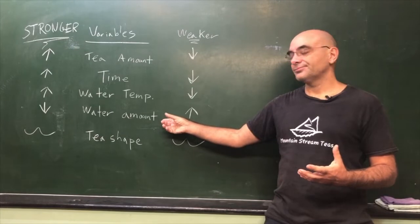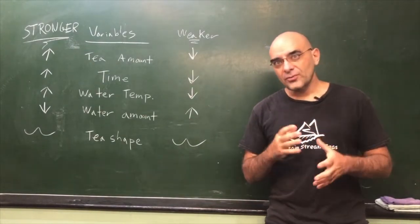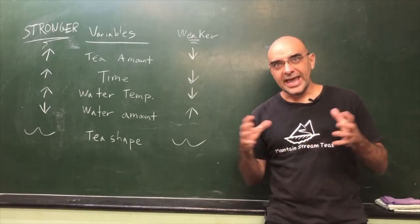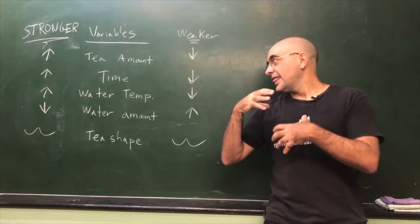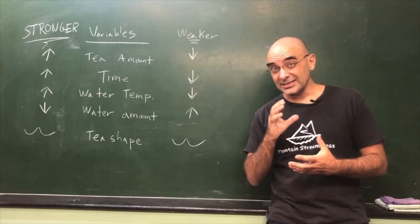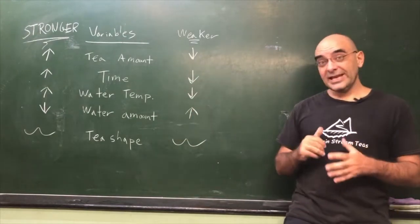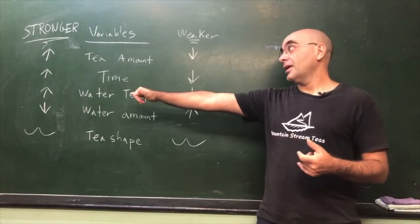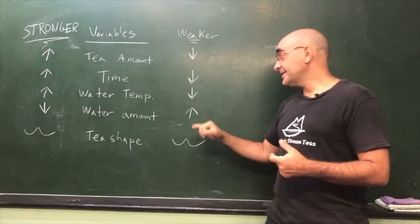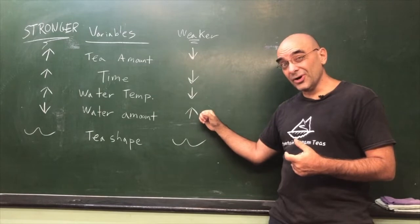Then we get to water amount. Now, this one is where the Gong Fu style of making tea that's used in most Han Chinese-dominated cultures, that Gong Fu style of making tea, this is where the water amount really starts getting different if you're used to the Western ways of brewing tea. But once again, in general, the stronger brew is with less water, and the more water you have, the weaker amount of tea.